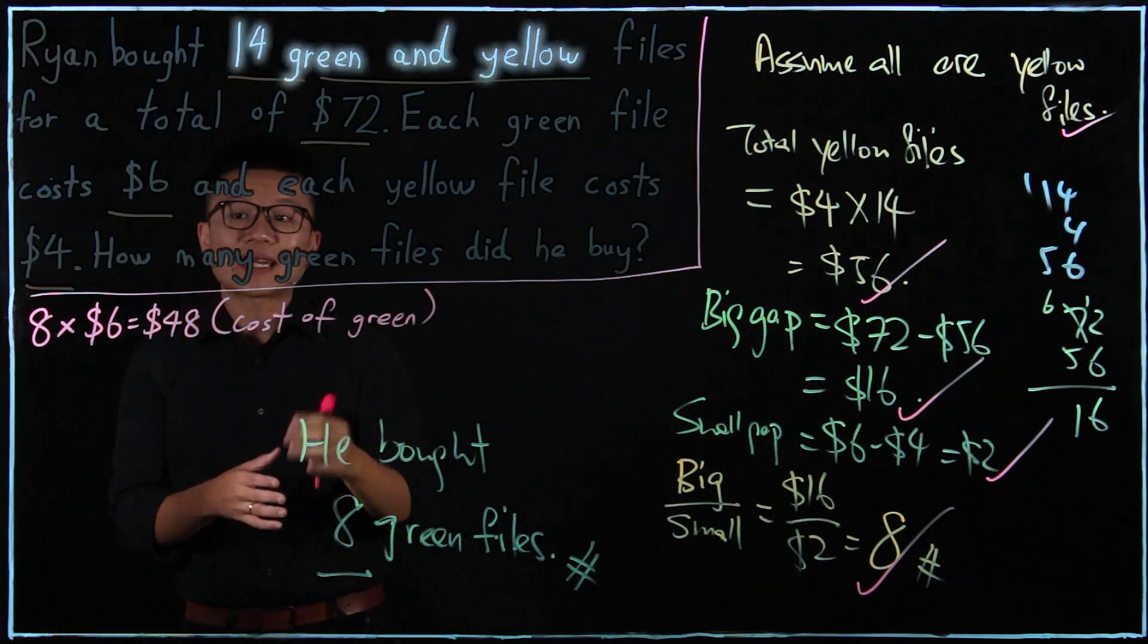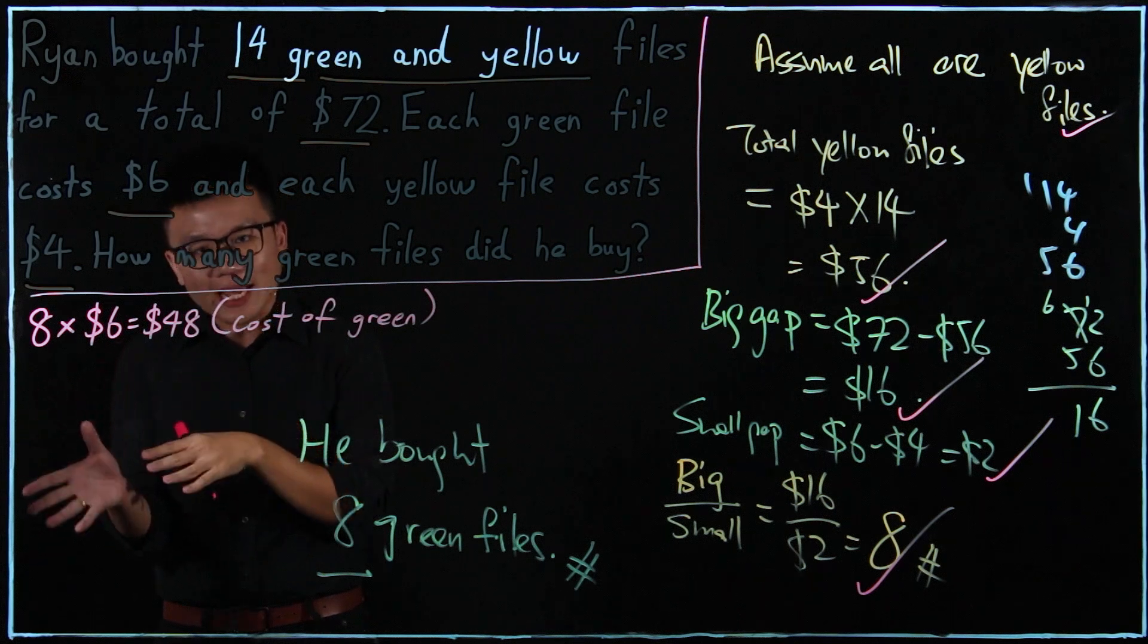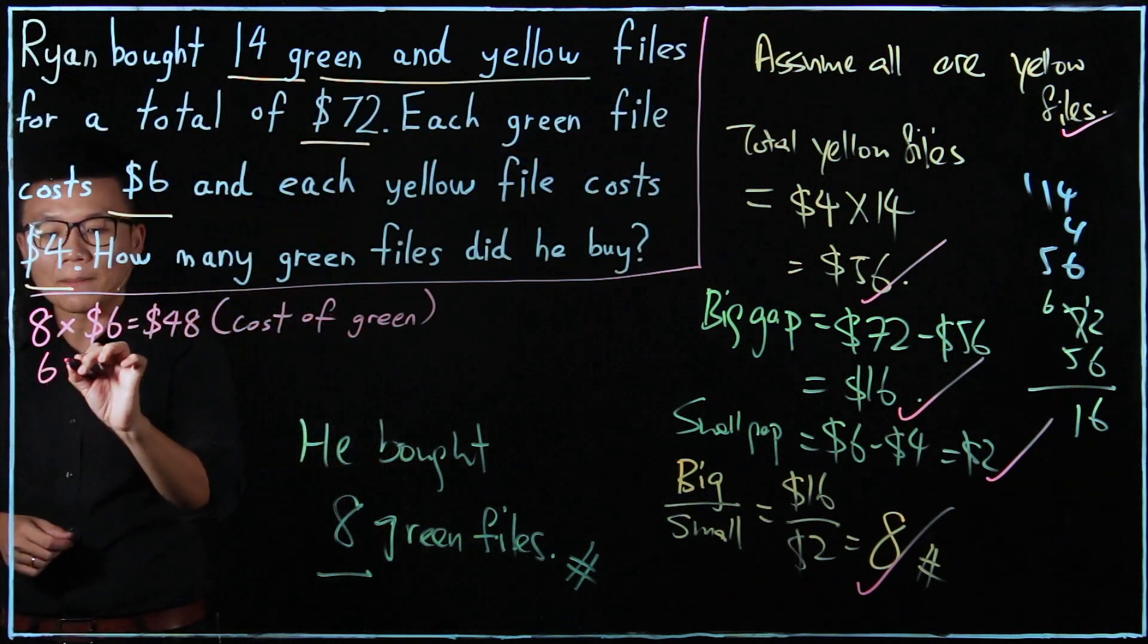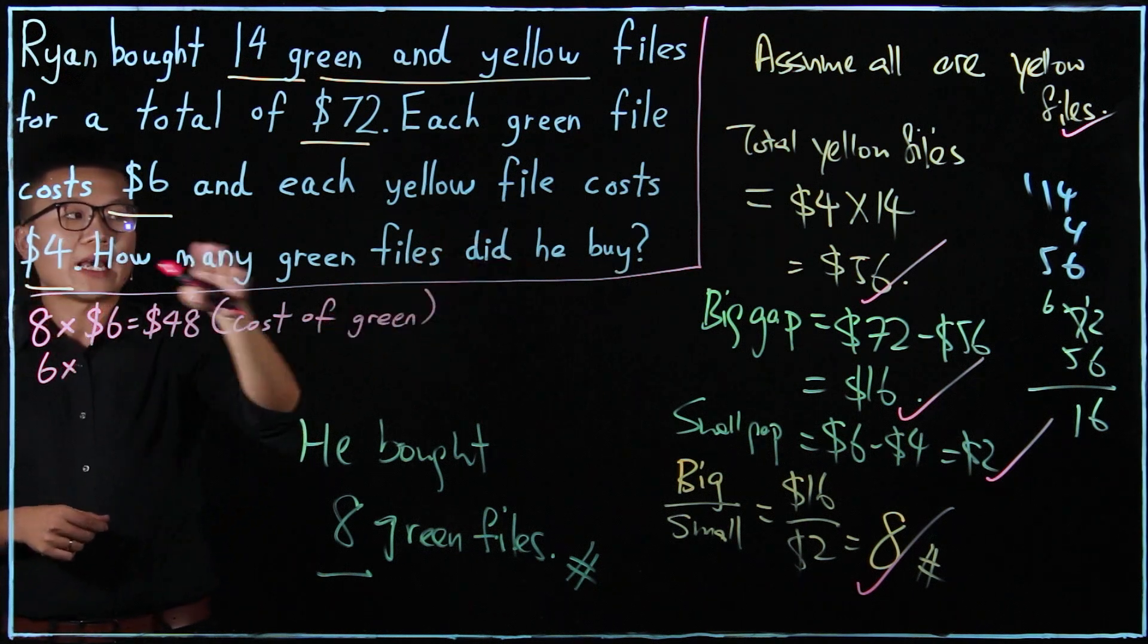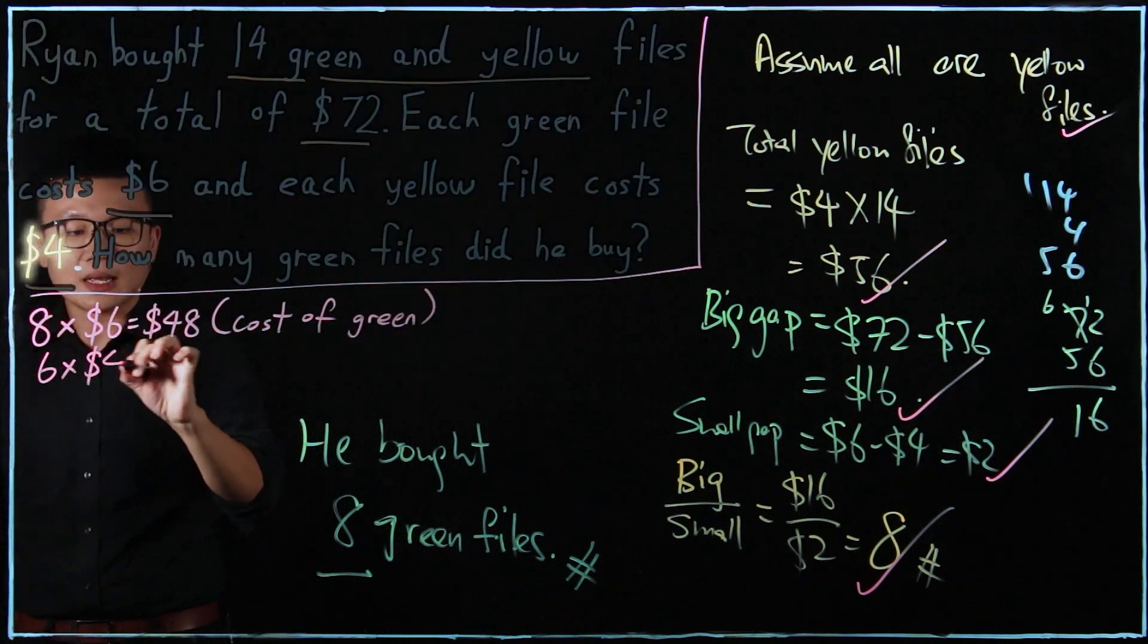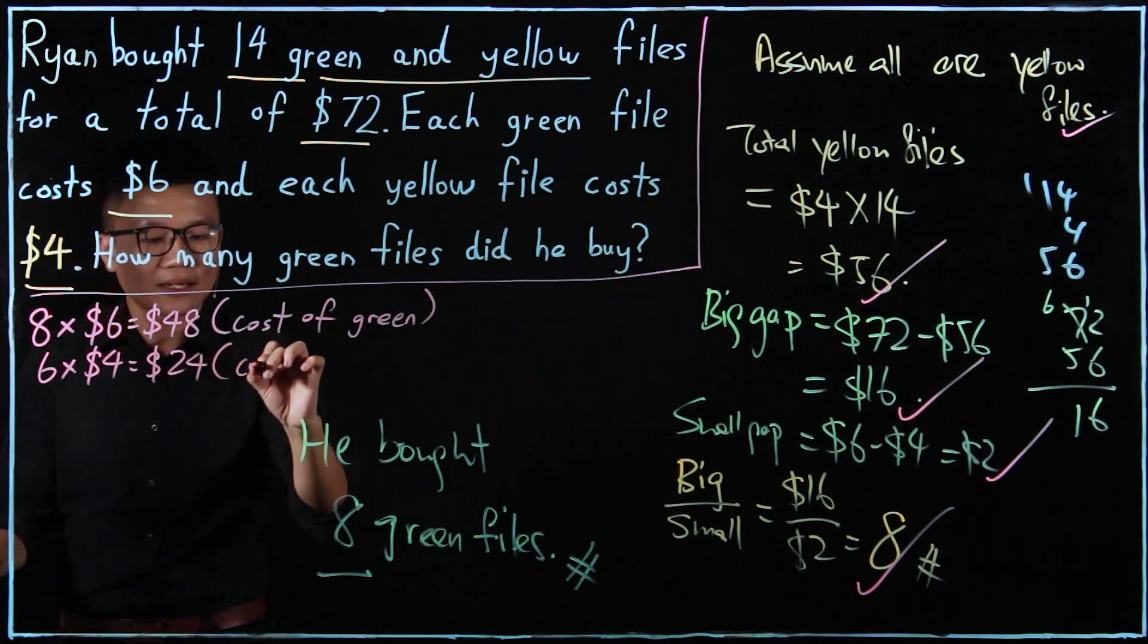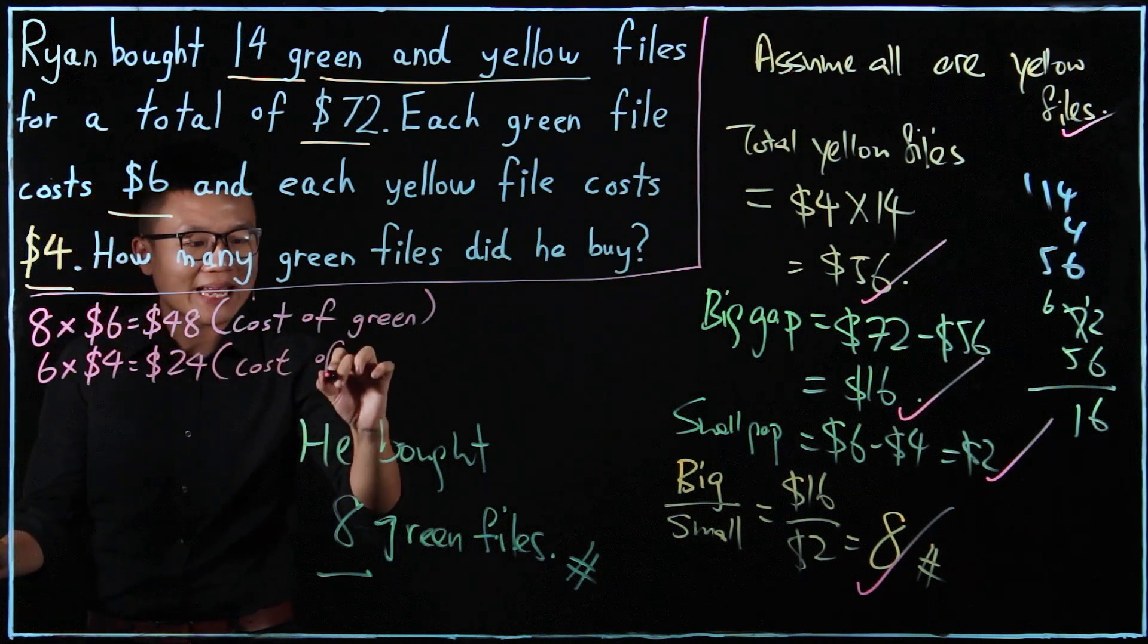Next, if there are 14 green and yellow files, that means if there's 8 green files, there should be 6 yellow files. So 6 multiplied by $4 will give me $24. So this is the cost of yellow.